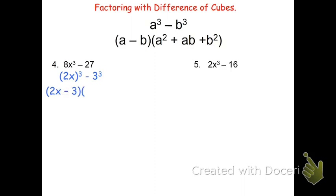I can rewrite this as (2x - 3) times (2x)² + 2x·3 + 3².